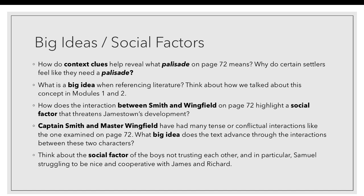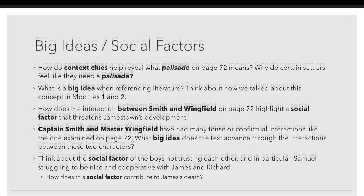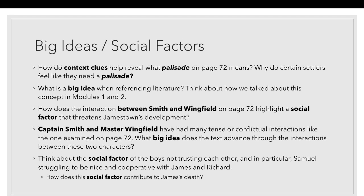Speaking of people who don't trust or respect each other — Samuel does not trust James and Richard, nor do they trust him. This is a smaller version of the conflict between Captain Smith and Master Wingfield. James being shot because he flees from the tent to get back to the ship, because he refuses to listen to Samuel, ultimately results in his death. But Samuel has given him absolutely no reason to trust him. James's decision makes sense — he doesn't think Samuel has his best interests at heart, so he tries to protect himself. While James's death isn't obviously Samuel's fault, this social factor has a lot to do with what happens to him. If there had been trust between the boys, James would have been more likely to listen and could have possibly stayed safe.